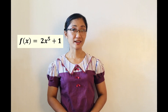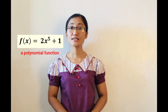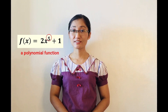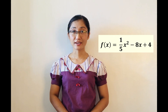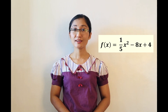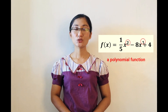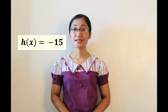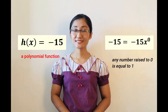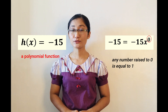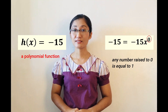Thus, f(x) = 2x⁵ + 1 is a polynomial function since the exponent 5 is a positive integer. Also, f(x) = (1/5)x² − 8x + 4 is a polynomial function since exponents 2 and 1 are both positive integers. Likewise, h(x) = −15 is a polynomial function since −15 comes from −15x⁰, and 0 is a non-negative integer.